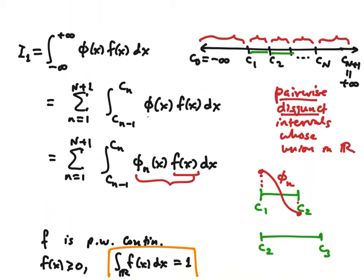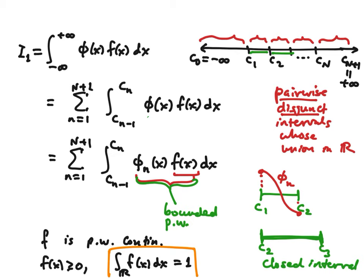When you have one of these closed intervals such as c2 to c3, not only is the interval just a closed interval, but the integrand is also bounded and it's piecewise continuous on that interval. By piecewise I mean a finite number of exception points — piecewise means discrete, and between two finite bounds, discrete means finite.